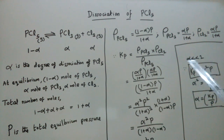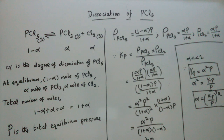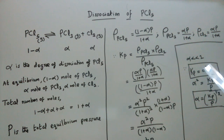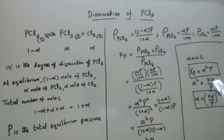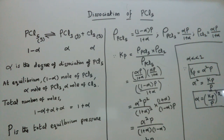Since alpha is less than 1, we can approximate by omitting the alpha squared term in the denominator. This gives us Kp approximately equal to alpha squared times P. Rearranging, alpha squared equals Kp divided by P, so alpha equals the square root of Kp over P, which can also be written as (Kp/P) to the power of one-half.